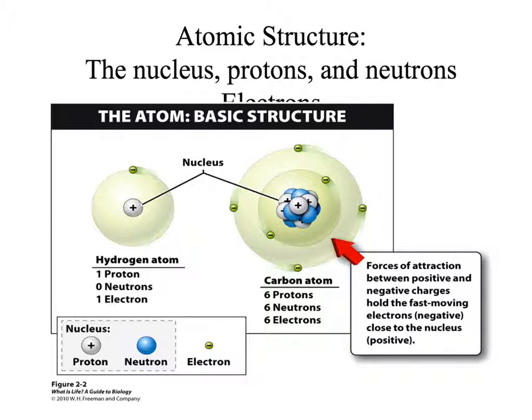Atoms have three types of subatomic structures. There are protons, neutrons, and electrons. The protons and neutrons are arranged together in the center, called the nucleus, and the electrons, which are much smaller, orbit around the nucleus in orbitals.